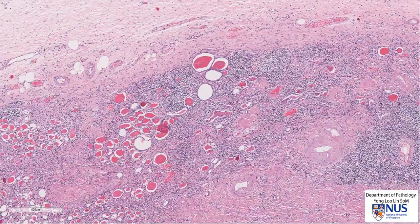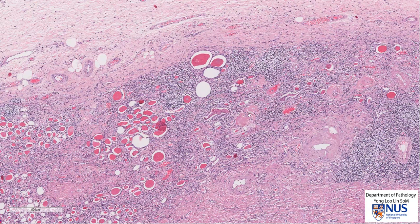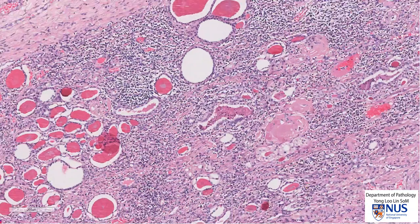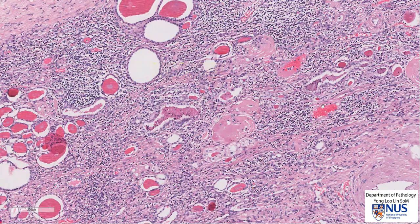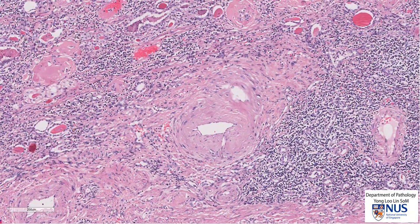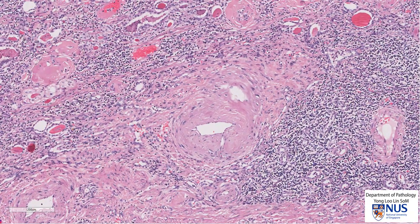As we move around, we can see many of these sclerosed pink globular structures, and these actually represent sclerosed glomeruli. So sclerosed glomeruli are also a feature of end-stage kidney. In addition, as we move along, we can also see some abnormal looking vessels where there is thickening of the tunica media.